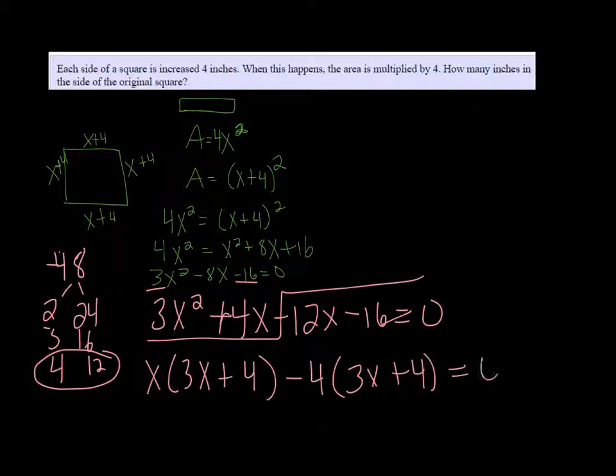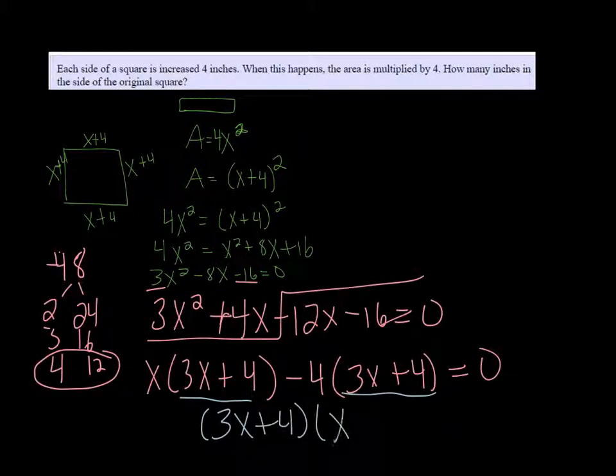And since the insides match, we're on the right track. So we can factor those out, the 3X plus 4s, and we're left with X minus 4.